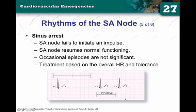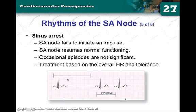Moving on to sinus arrest. Sinus arrest could be the product of sick sinus syndrome, but it occurs when the SA node fails to initiate an impulse. That period right there — where you would normally expect the next QRS complex — there is none. There is an arrest period; it's a little segment of asystole. Not really significant if it happens occasionally, but it probably indicates something going on with the SA node. If you see an otherwise normal sinus rhythm with a long pause, you can safely say there is probably a sinus arrest — that is the arrest portion of that rhythm.